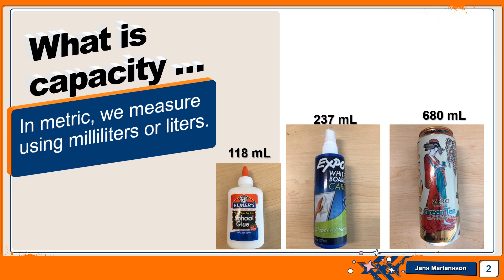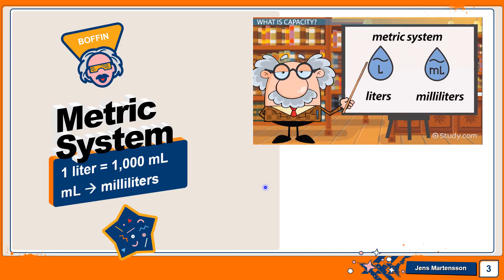Now let's investigate a little further on the metric system. The metric system is based on a base of 10 — so that means 10, 100, 1000. In this case, one liter is 1000 milliliters.